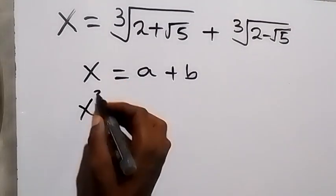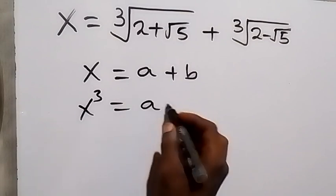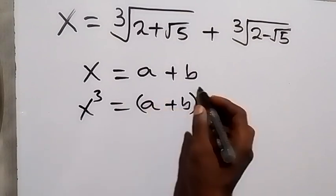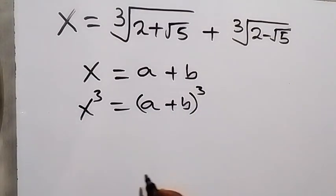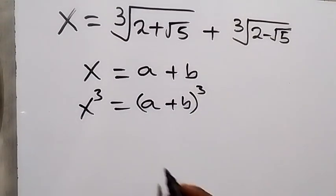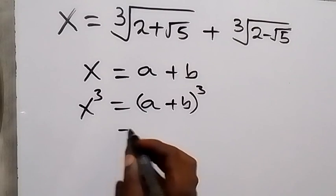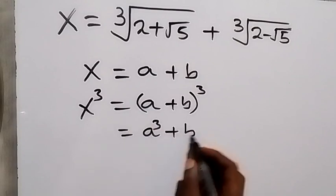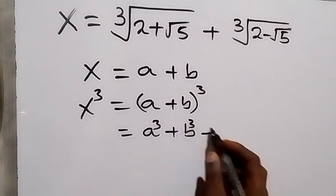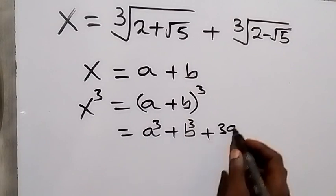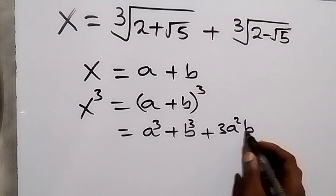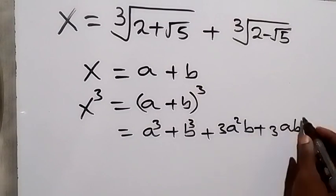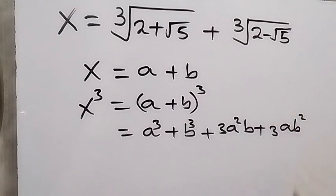From there, let's take the cube on both sides, so we have x cubed equals (a + b) cubed. When we expand the right-hand side, this is the same as a cubed plus b cubed plus 3a²b plus 3ab².